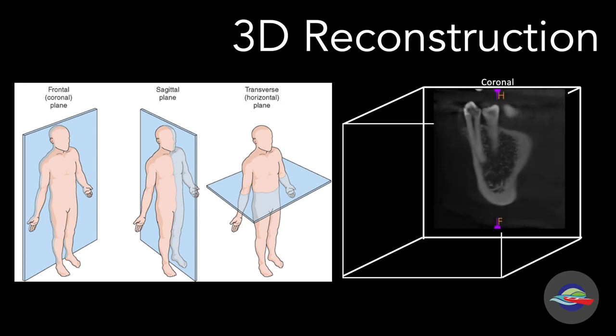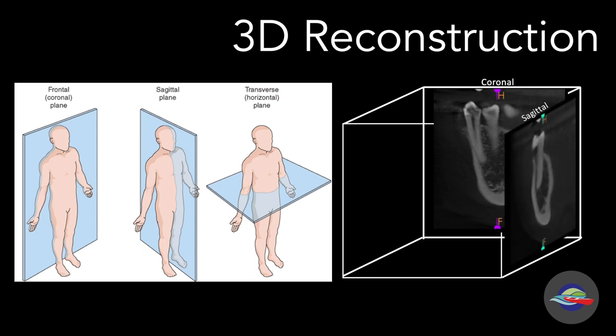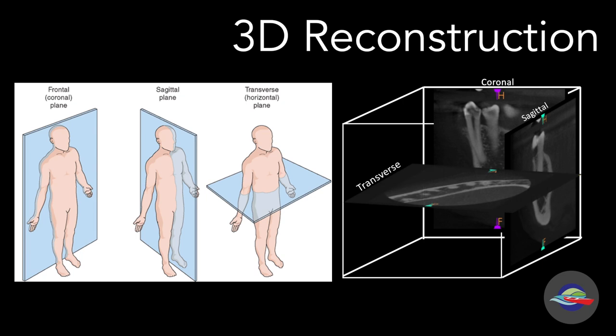In a CBCT acquired image, we have the frontal view, the sagittal view — a view from the side — and the transverse view — a view from the top down. When we are not accustomed to seeing 2D images of a tooth from three different planes, it can take a minute to orientate ourselves. But after some practice, visualizing a 2D image in 3D space starts to become second nature.